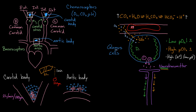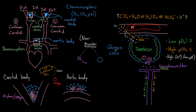You might notice that the glomus cell — depolarizing and releasing neurotransmitter — sounds a lot like a nerve cell. The reason is that these two cell types have a common ancestor. During fetal development, there is a type of tissue called the neuroectoderm. Both the nerve cell and the glomus cell are derived from the neuroectoderm, so it makes sense that they share many common features.